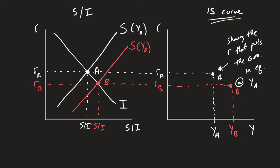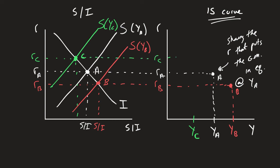Let's also consider y_c, which is a lower level of income — going to be a leftward shift of the savings function. This gets us point c, which is a higher interest rate. So if we have a lower level of income, we would need a higher level of the real interest rate to put the goods market in equilibrium. This tells us that we get a downward sloping IS curve.